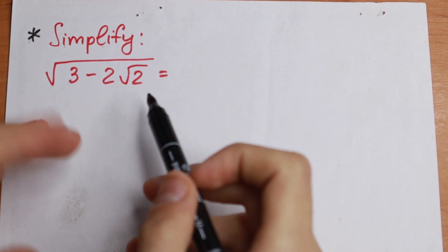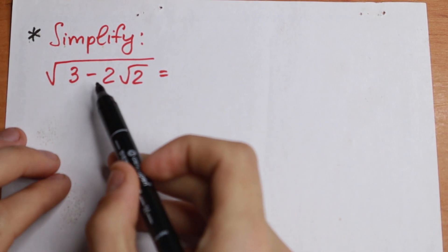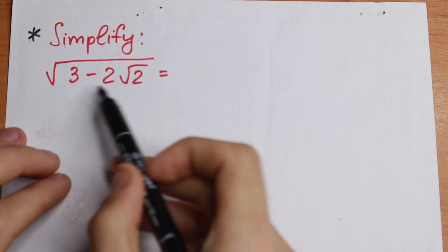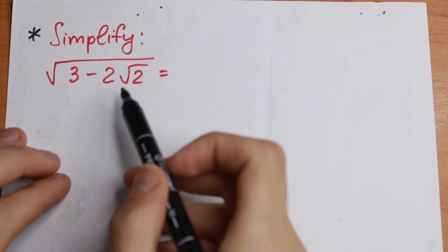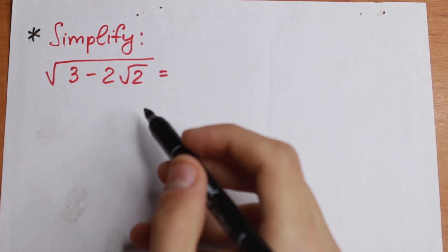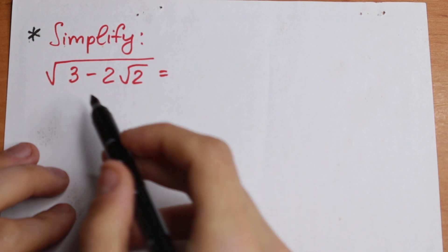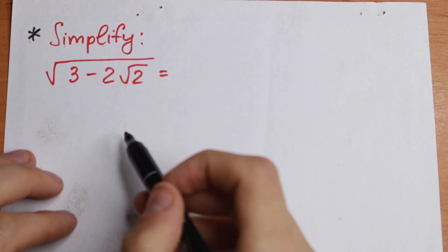There is no obvious trivial case here, because we don't have a nice clean expression under the square root sign. So what are we going to do? I'm going to suggest a really good approach for how to simplify this kind of question.